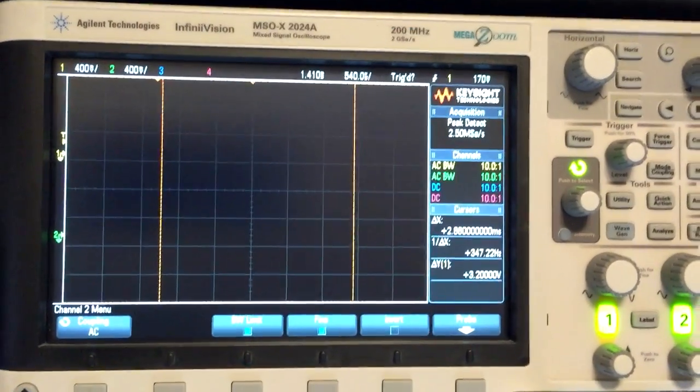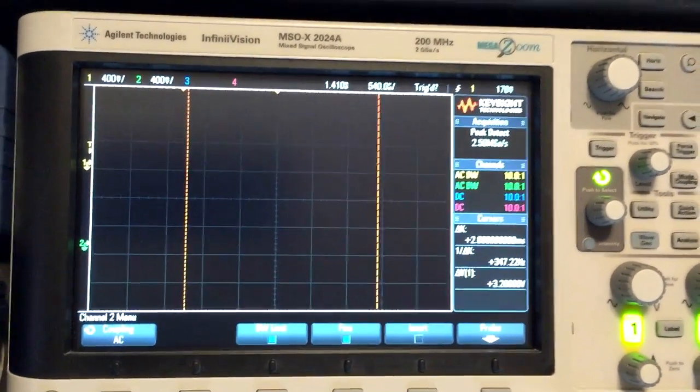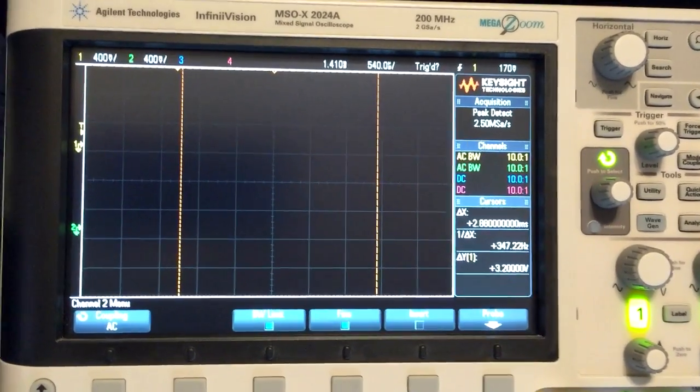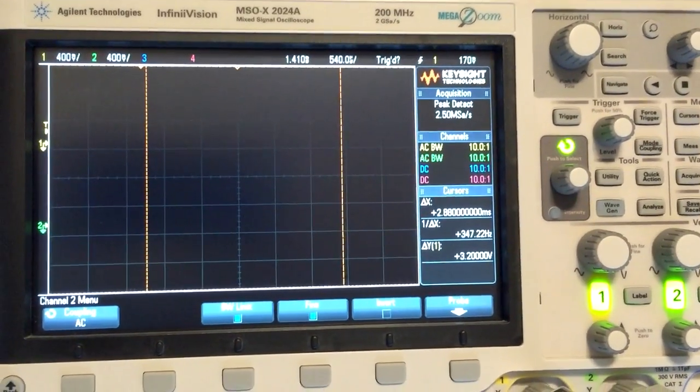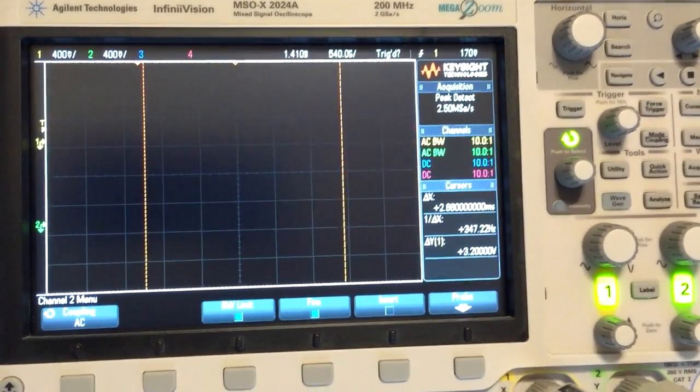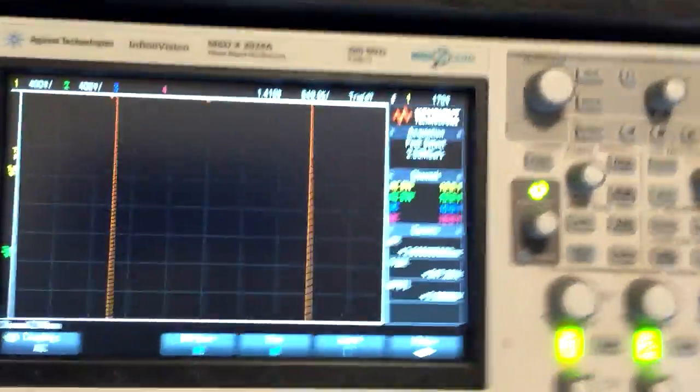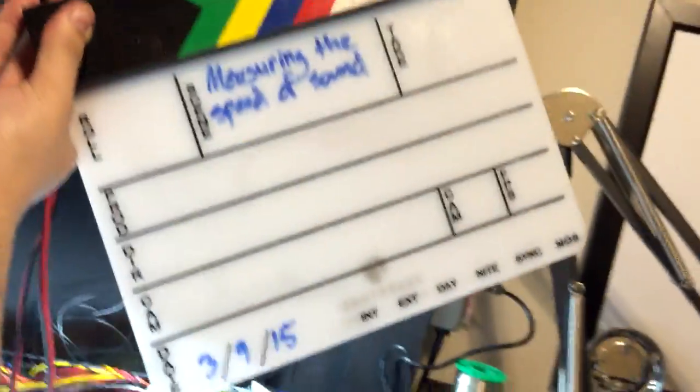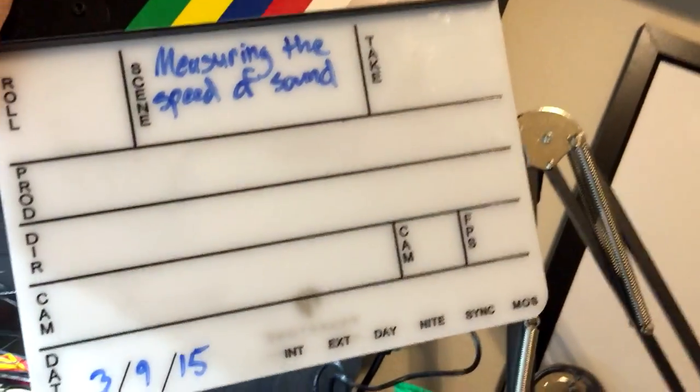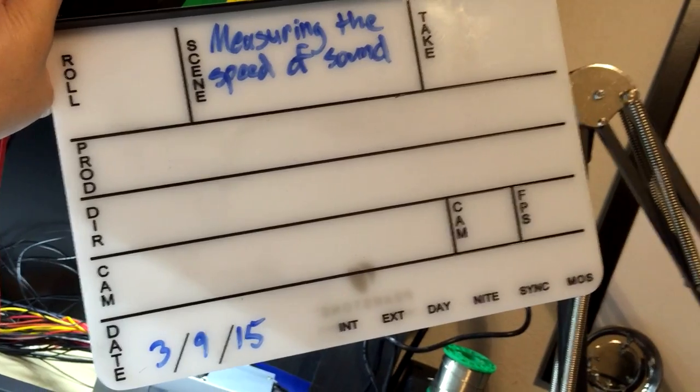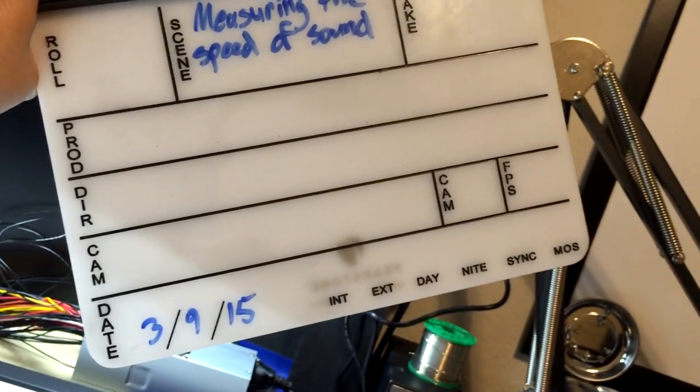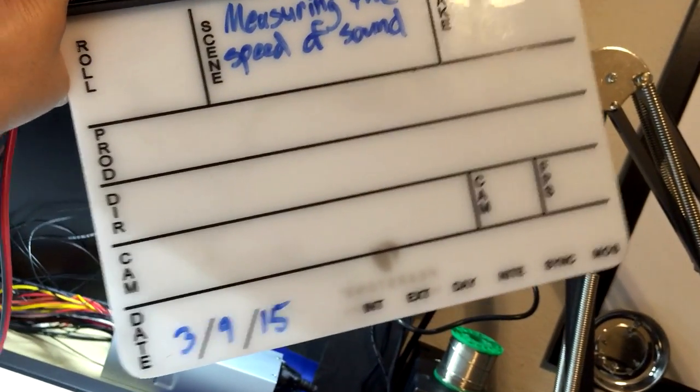Now I'm gonna set it back to single shot, and I'm gonna speak a little more quietly so I don't accidentally trigger it. I found that clapping hurts my hands when I clap hard enough to get the trigger, and it wasn't as clean of a waveform. What I found worked great was to use my clapper board.